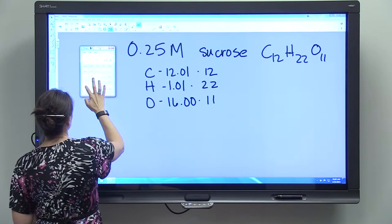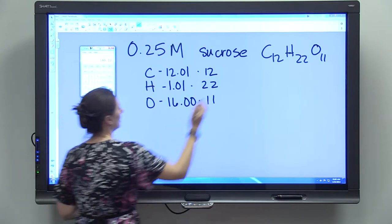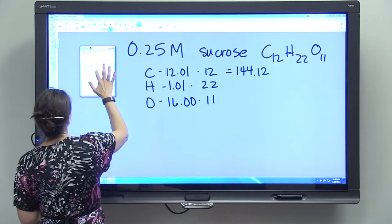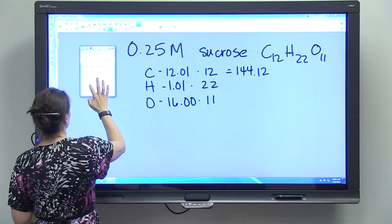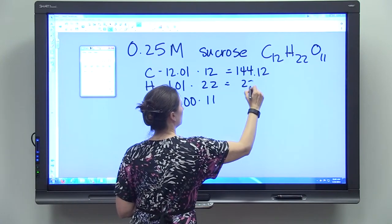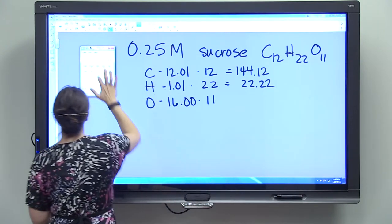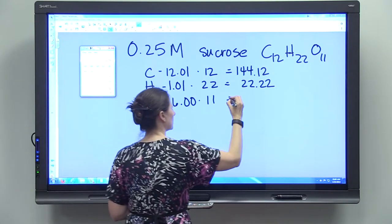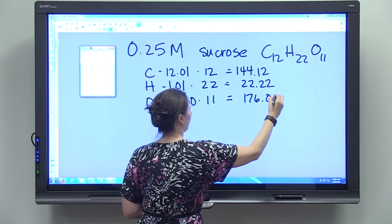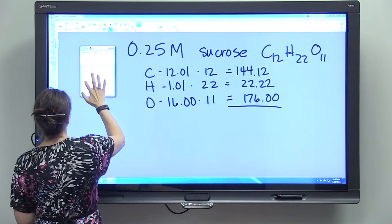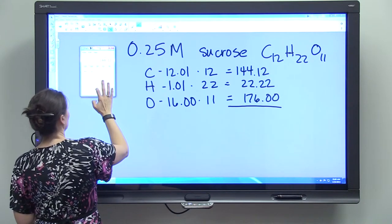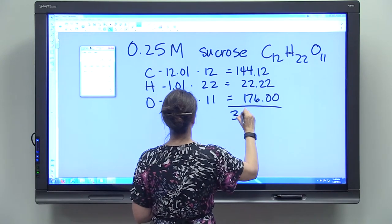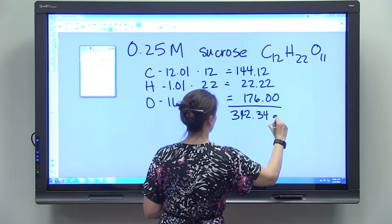So we're going to have 12.01 times 12, giving us 144.12. We're going to have 1.01 times 22, giving us 22.22. And then 16.00 times 11, giving us 176. So if we add those up, we're going to have 342.34 grams per mole.